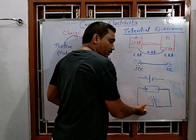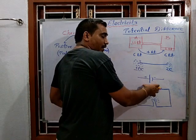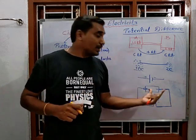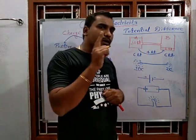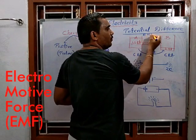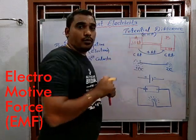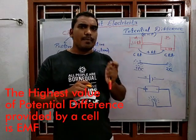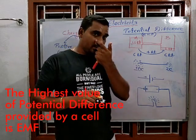Electrons are going to flow towards the positive terminal. When we create a potential difference using a cell, the potential difference is the maximum potential difference that can be created by that cell.